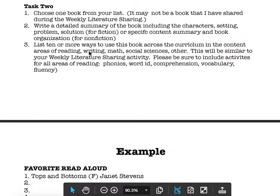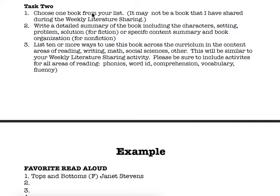Then you're ready to move on to Task 2. In Task 2, you're going to choose one of the books from your list. Please do not choose a book that we have completed during the weekly literature sharing activity, because I want you doing a book that's fresh. For your book, you're either going to summarize it if it's a fiction book, or discuss the specific content and book organization if you choose a nonfiction book. Then you're going to write ten or more ways to use this book across the curriculum — breaking it down for reading, writing, math, and social sciences — thinking about phonics, word ID, comprehension, vocabulary, and fluency. Make sure you hit a variety of topics.